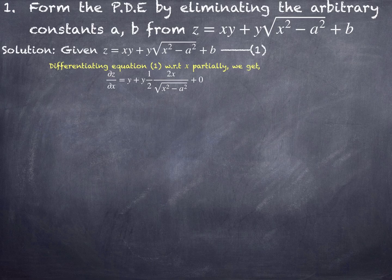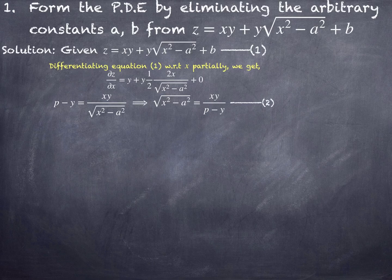Simplifying this expression: since z is a function of x and y only, I use the standard notation ∂z/∂x as p. Transforming the first term y to the other side, the remaining terms give xy divided by √(x²-a²), and the 2's cancel. Simplifying for √(x²-a²) gives xy/(p-y), call that equation number 3.